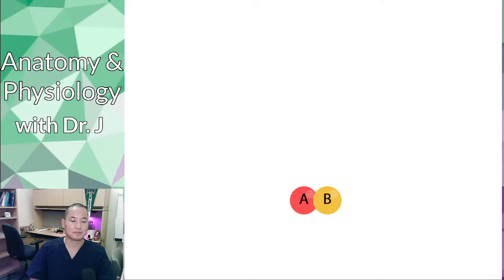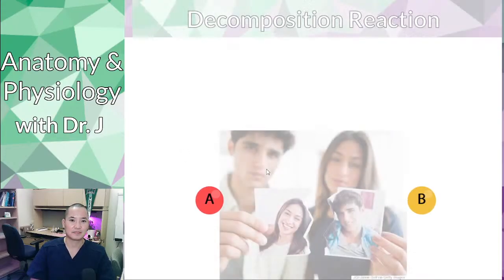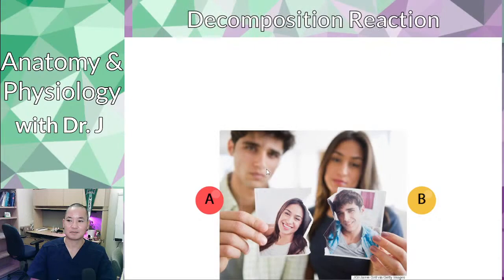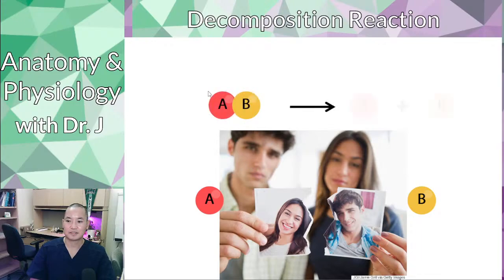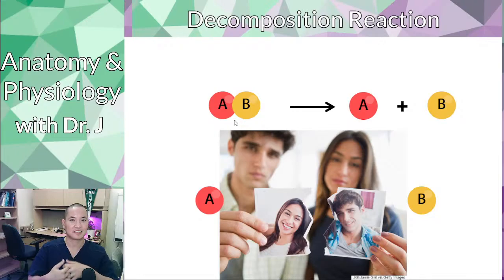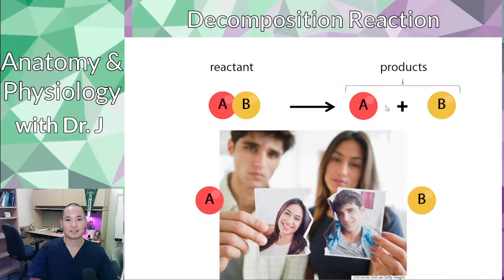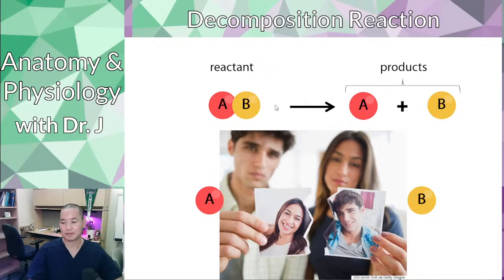The opposite of synthesis is decomposition — like a breaking up between atoms. Here we start with a reactant: two atoms that were bonded together, and now they broke apart into products that are individually smaller than the initial reactant. This is also why it's called a catabolic reaction.